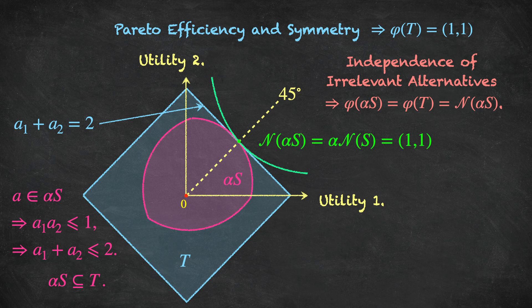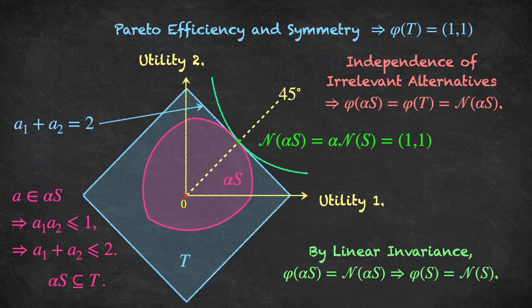We've shown that phi, which satisfies axioms 1 through 4, coincides with the Nash solution for the game T and also for the game alpha*S. Finally, we can use the linear invariance axiom to say: if our solution concept coincides with the Nash solution in the game alpha*S, then it also coincides with the Nash solution in our original game S. We picked an arbitrary bargaining game S and showed that phi of S must equal the Nash bargaining solution for S. Since S was chosen arbitrarily, this holds for all bargaining problems, so phi equals the Nash bargaining solution. That completes the proof of Proposition 2.